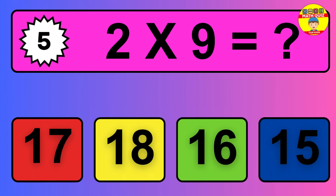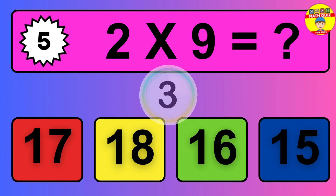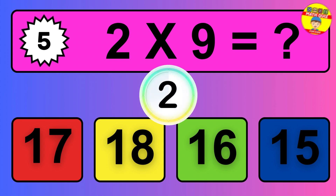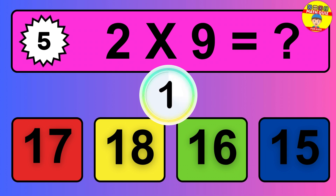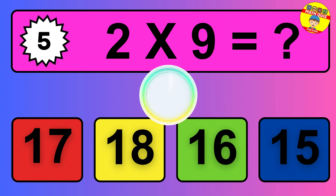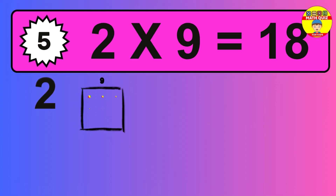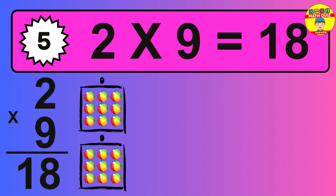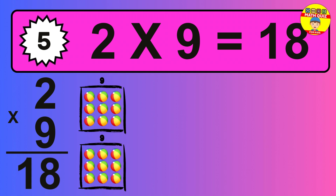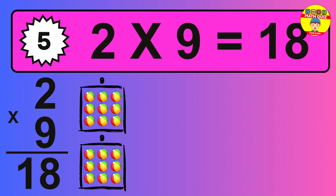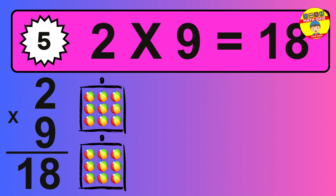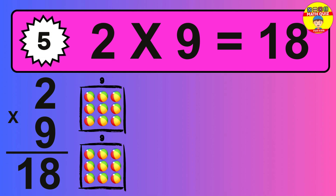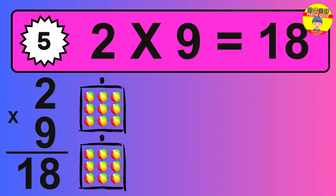Question 5. 2 times 9 equals what? So the answer is 2 times 9 is 18. To calculate, we have 2 groups with 9 balls each one. So how many balls do we have? 18 balls.